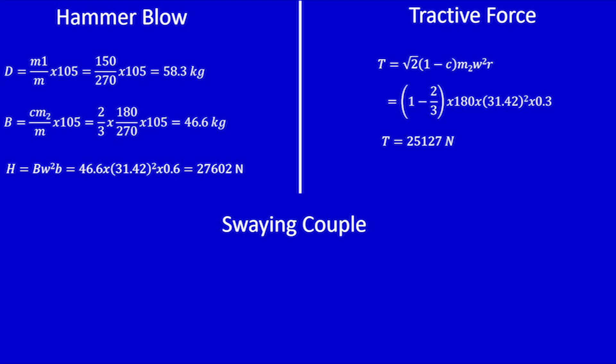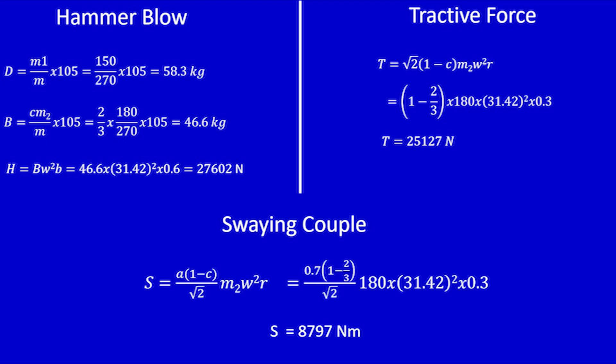Tractive force T equals √2 × (1 − c) × m₂ × ω² × r, where c equals 2/3, m₂ equals 180 (actually 190 per problem), ω equals 31.42, and r equals 0.3. Multiplying these parameters gives T equals 25,127 N. Swaying couple S equals (a / √2) × (1 − c) × m₂ × ω² × r, where a equals 0.7, c equals 2/3, m₂ equals 180, ω equals 31.42, r equals 0.3. Substituting and multiplying gives S equals 8,797 N·m.